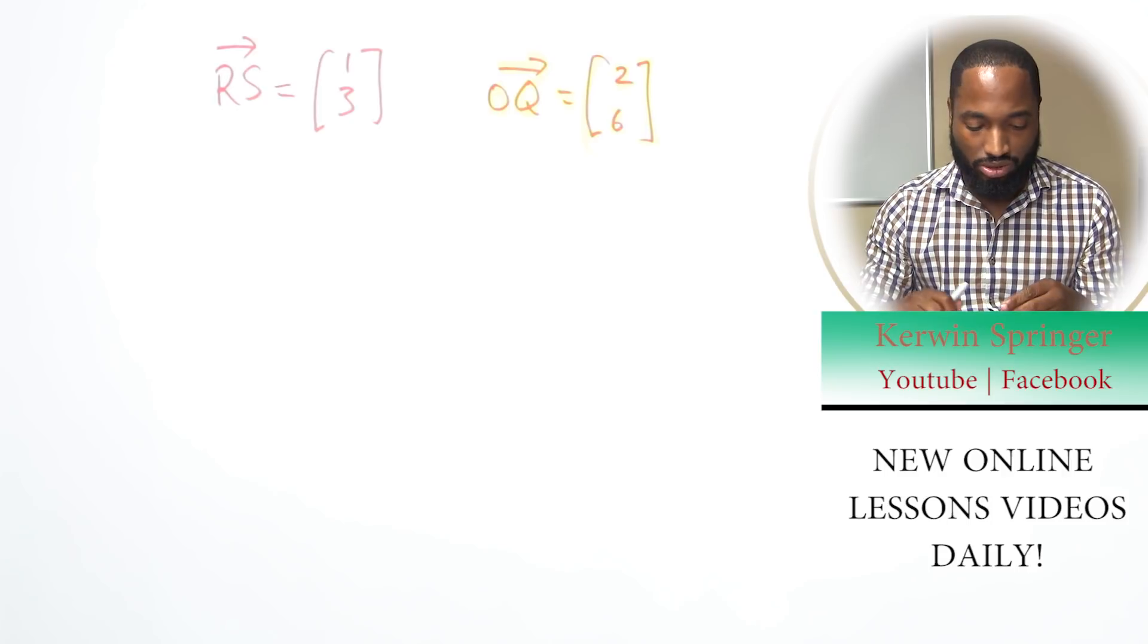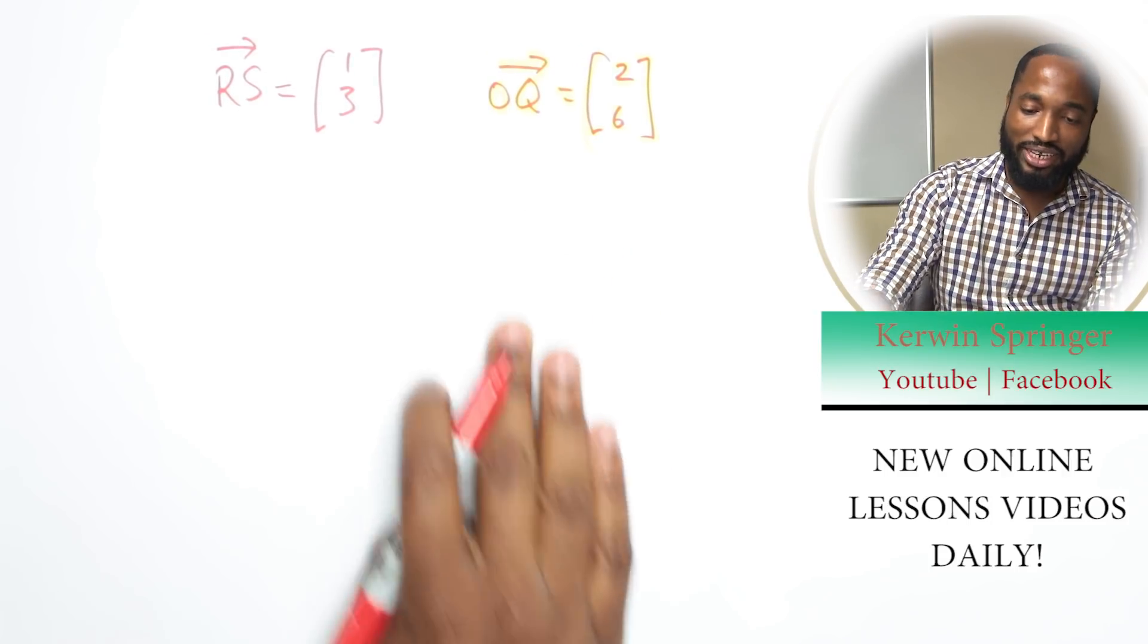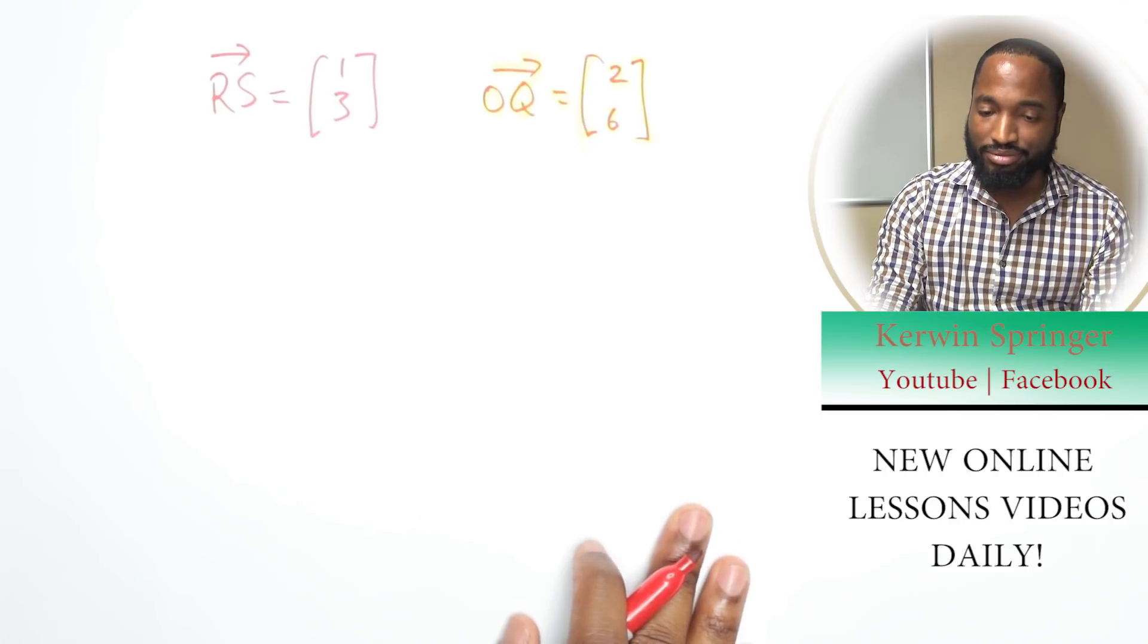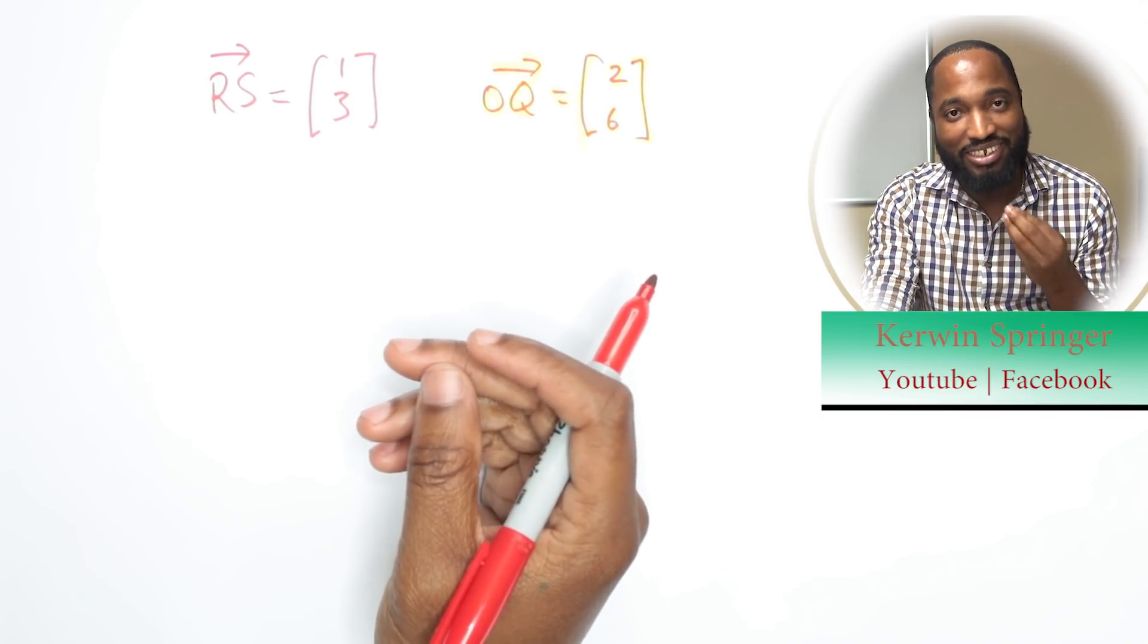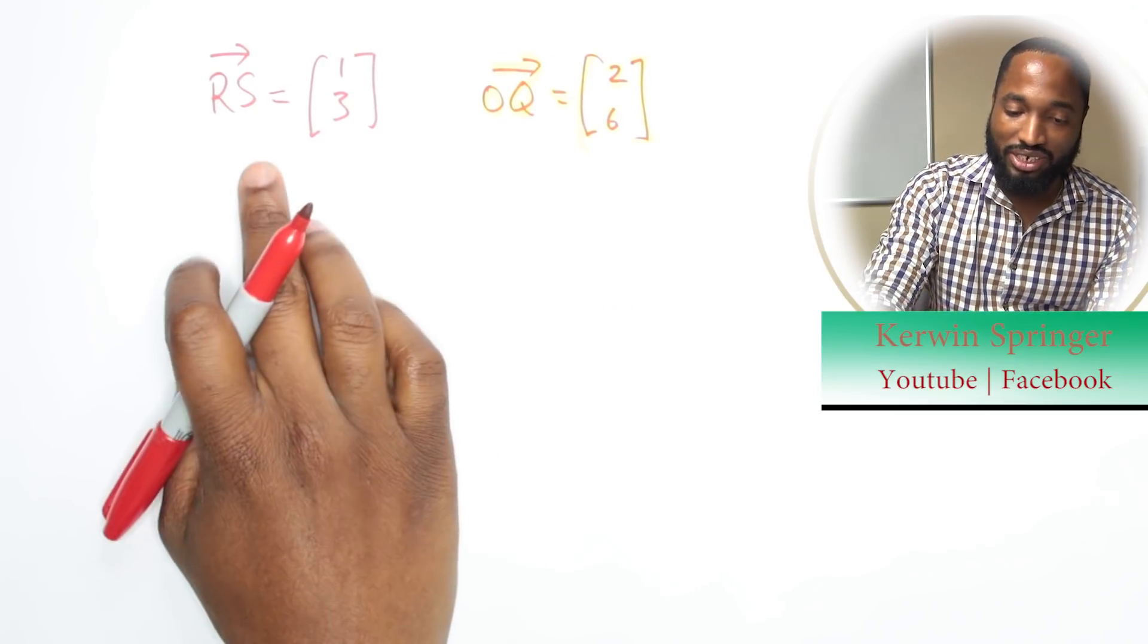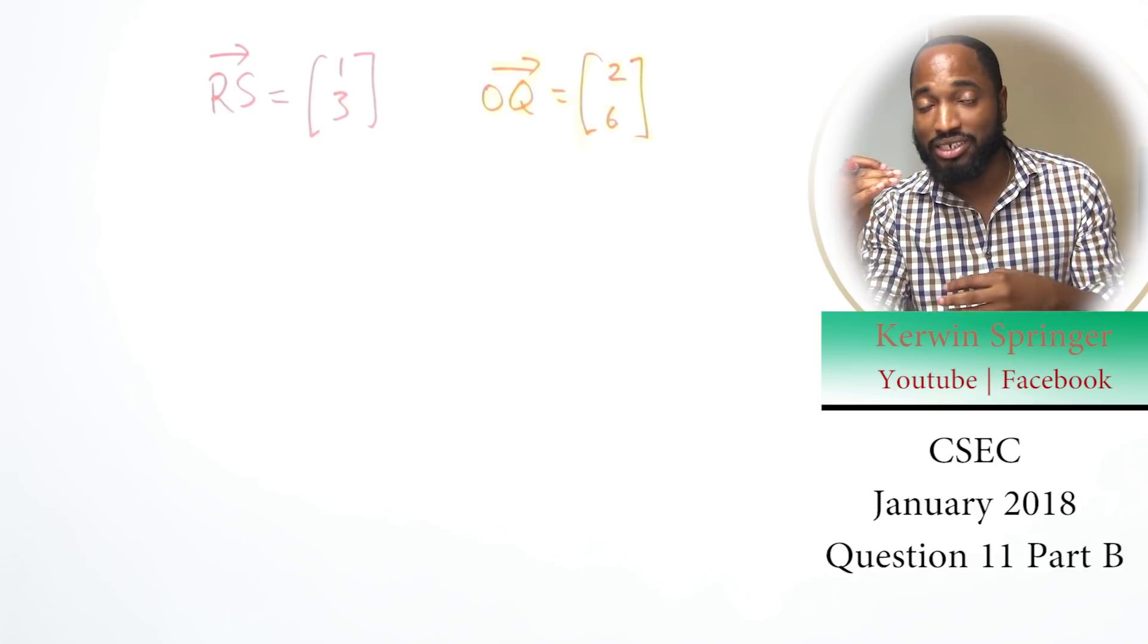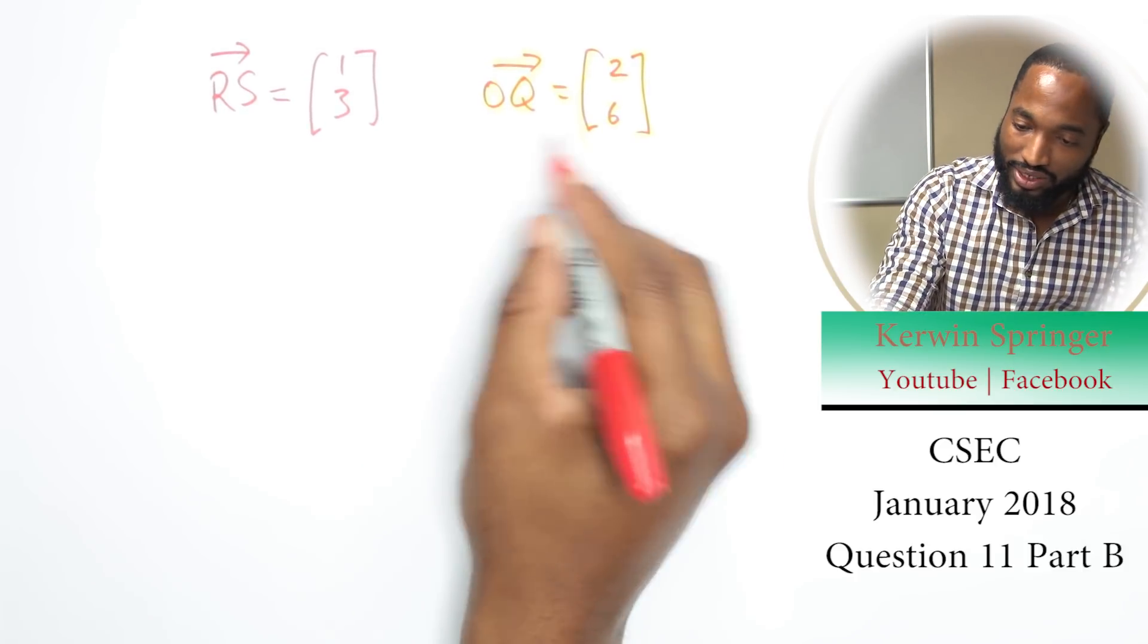Use some mathematical terms here. The word you want to use that will make the examiner say 'hmm' is scalar multiple. Have that in your vocabulary ready when they ask you to show that this vector is parallel to that vector. Which one is the scalar multiple?